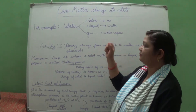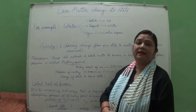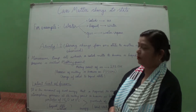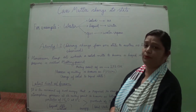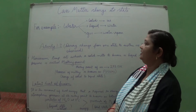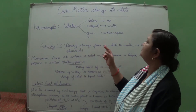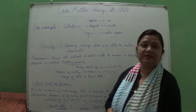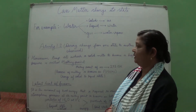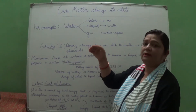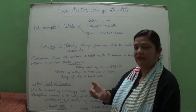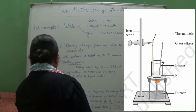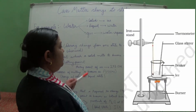For this we will be performing Activity 1.2, which is given in your book. In this activity we are observing that during a change from one state to another, no temperature difference is observed. We will perform an experiment for this. You can see the figure on the board.